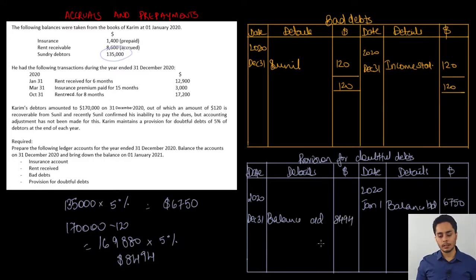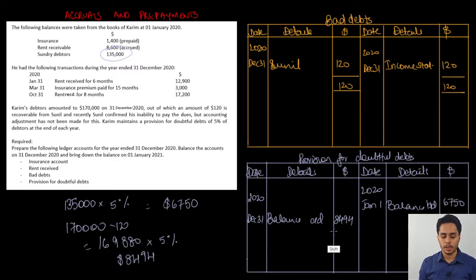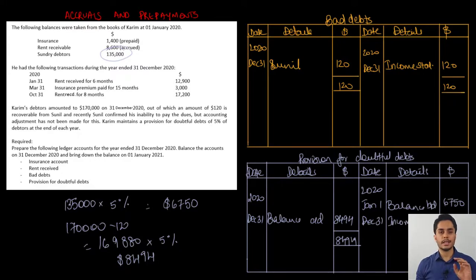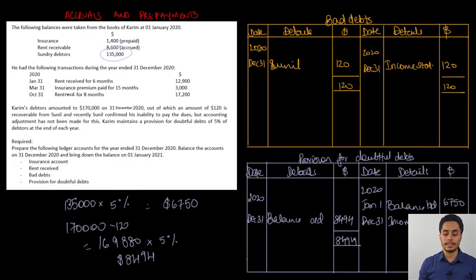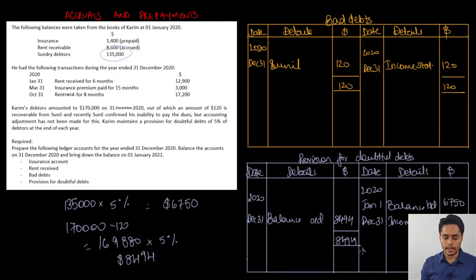With the opening balance of $6,750 and the closing balance of $8,494, the next step is to balance the account and put the difference in the income statement. Taking a total on the debit side: $8,494. On the credit side, December 31, income statement: the difference is $8,494 minus $6,750 equals $1,744. This is the amount transferred to the income statement as an expense for the year under provision for doubtful debts. In 2021, the balance is brought down: January 1, balance brought down $8,494.